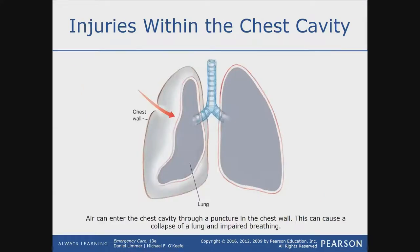Air can enter the chest cavity through a puncture in the chest wall — that's an open chest wound. This is giving you a better visual of what we're talking about as far as air entering the chest cavity and causing tension in the thorax.